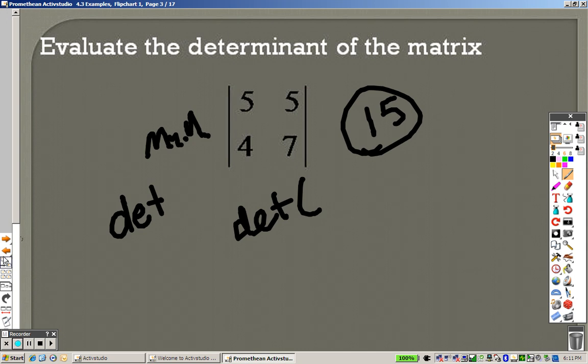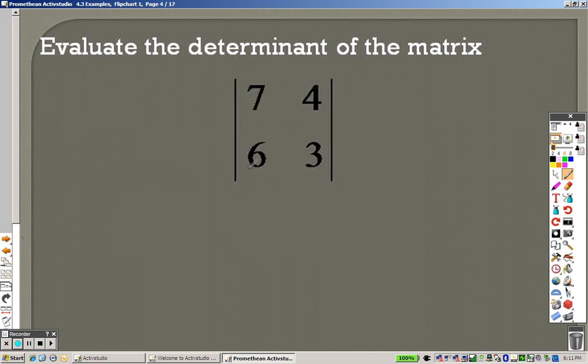Now, my personal opinion is 2x2s are really simple, right? Like I said, it's down, which is 21, minus up, which is 24. 21 minus 24 is negative 3. And there's your answer for that.